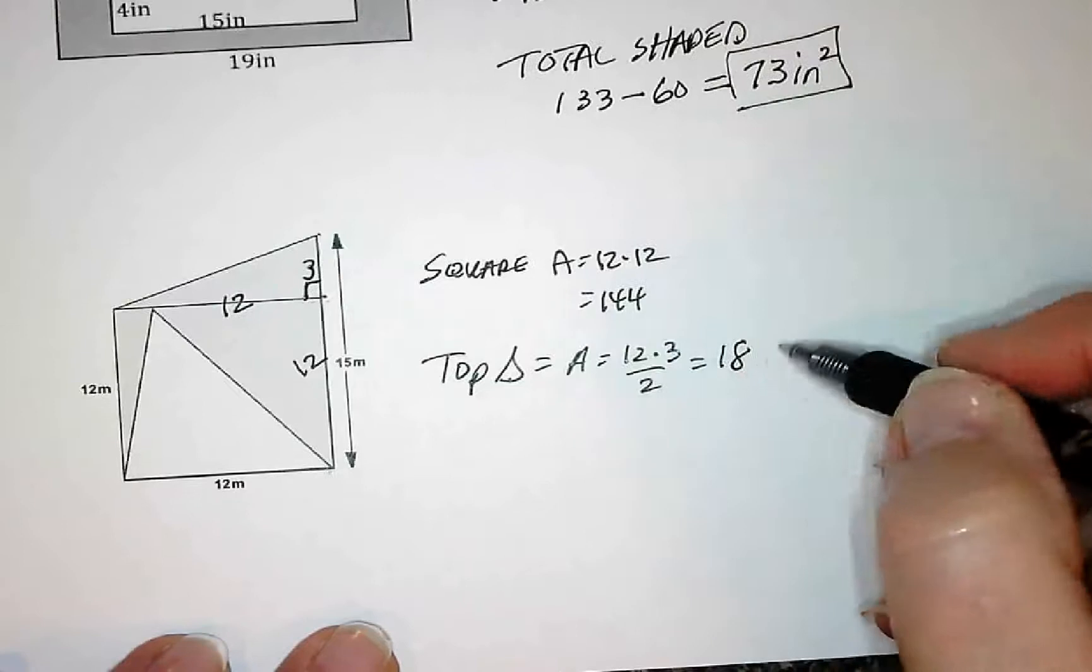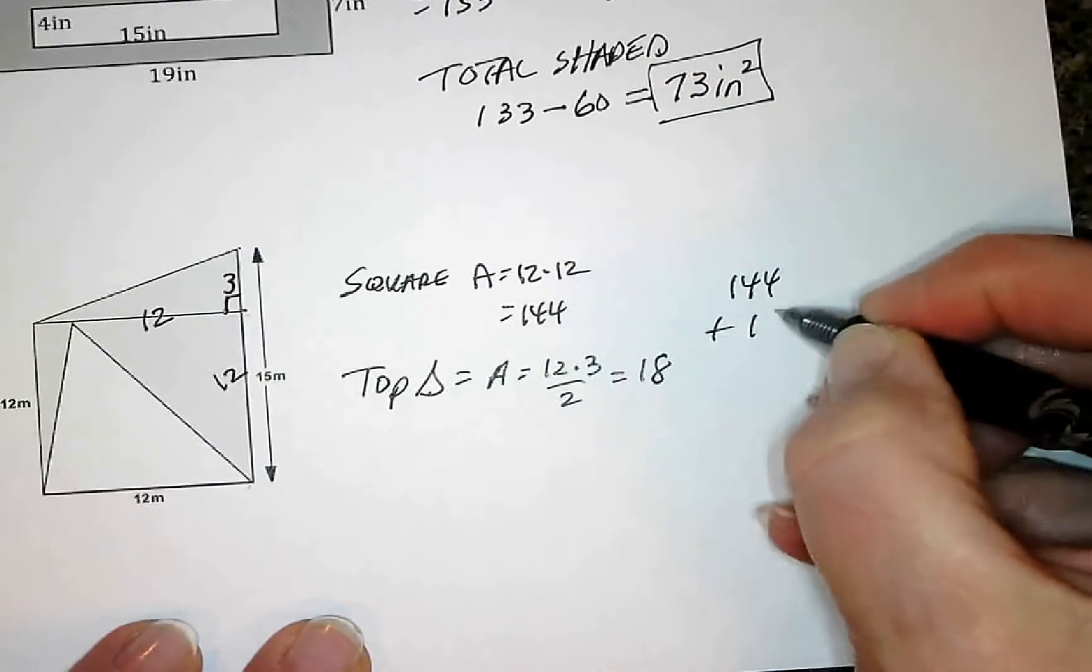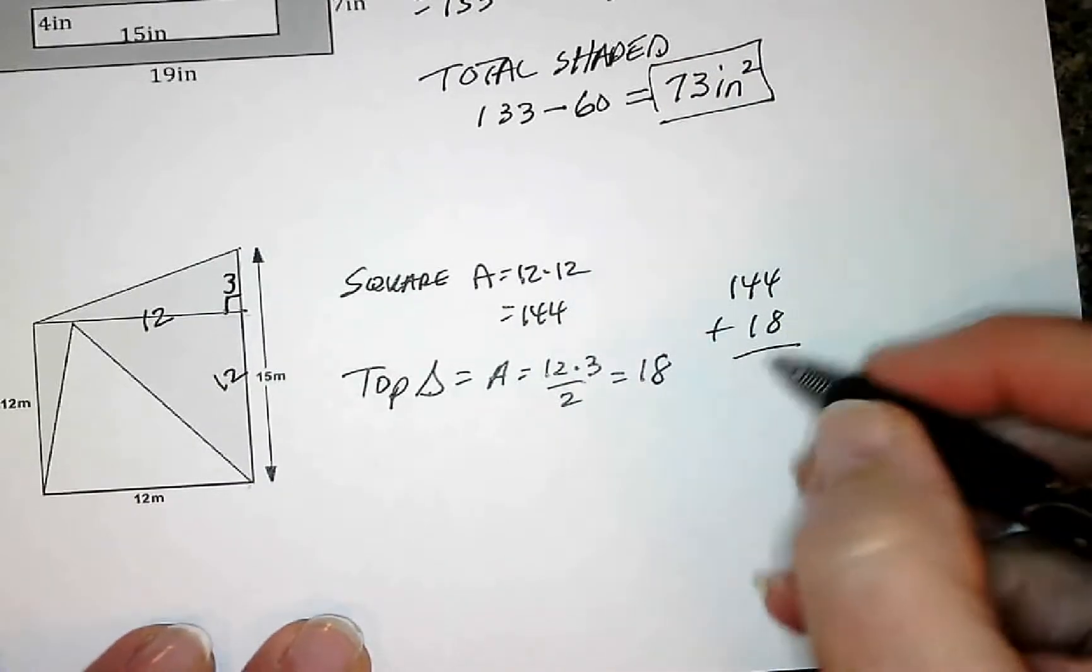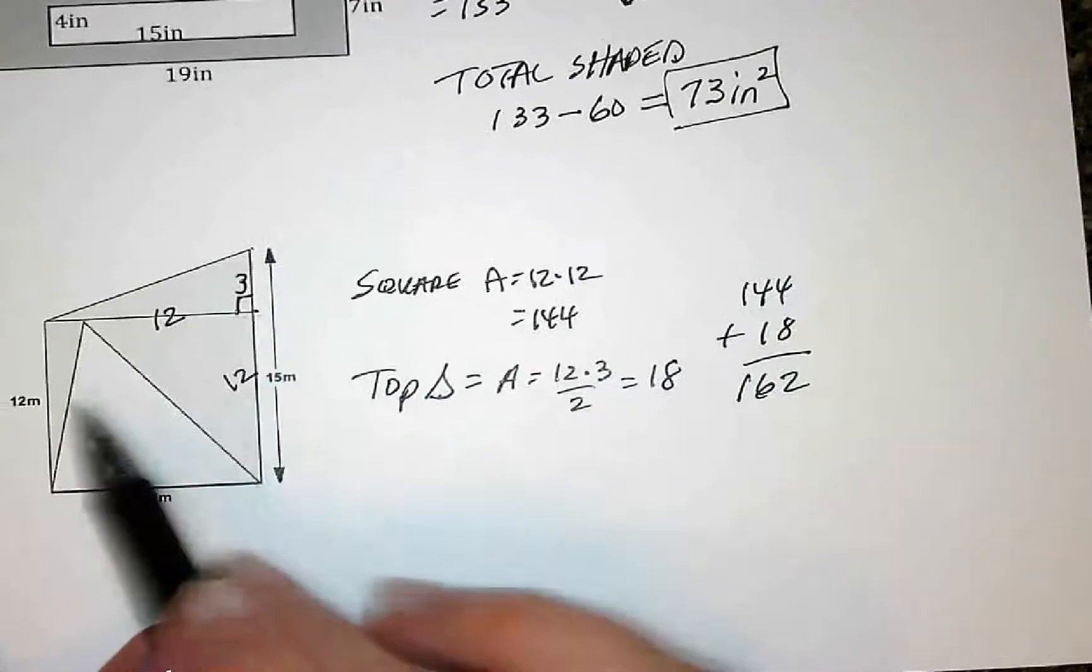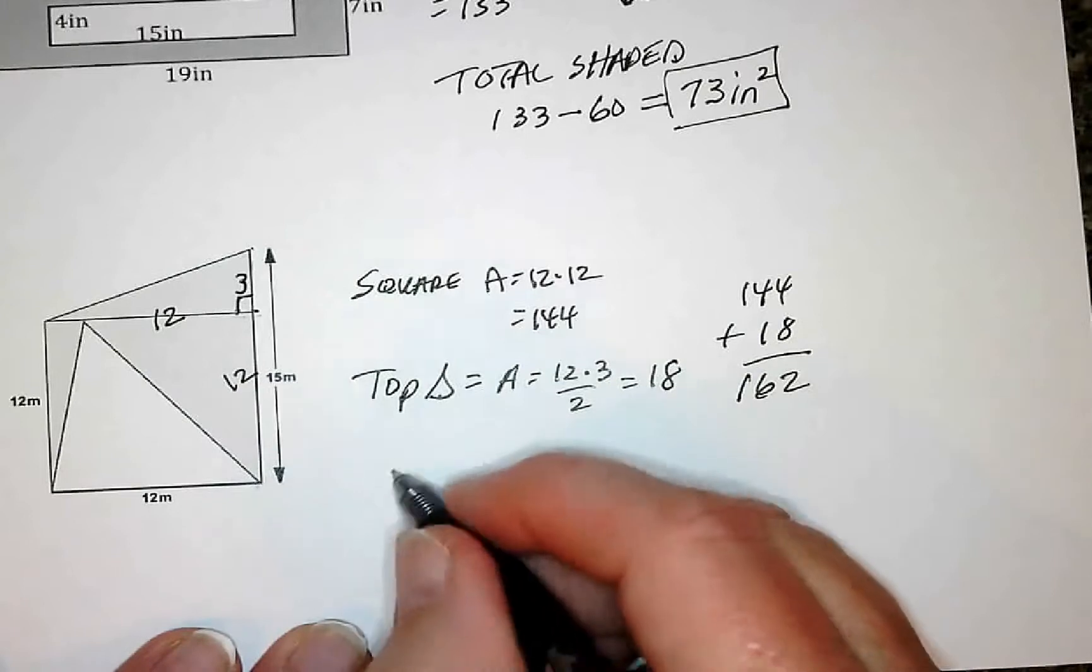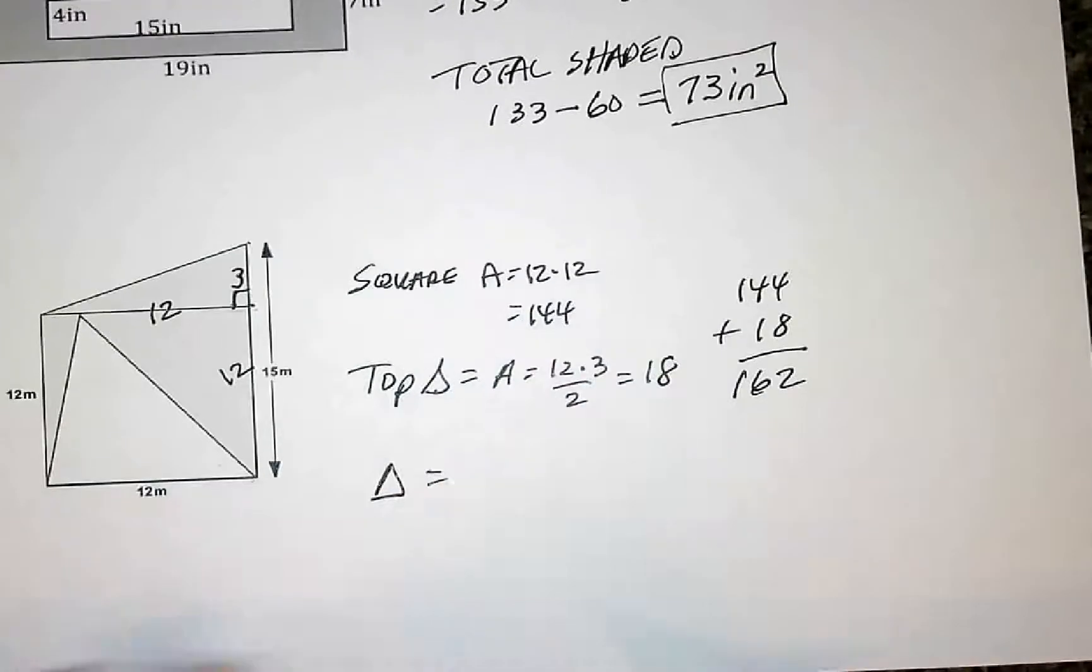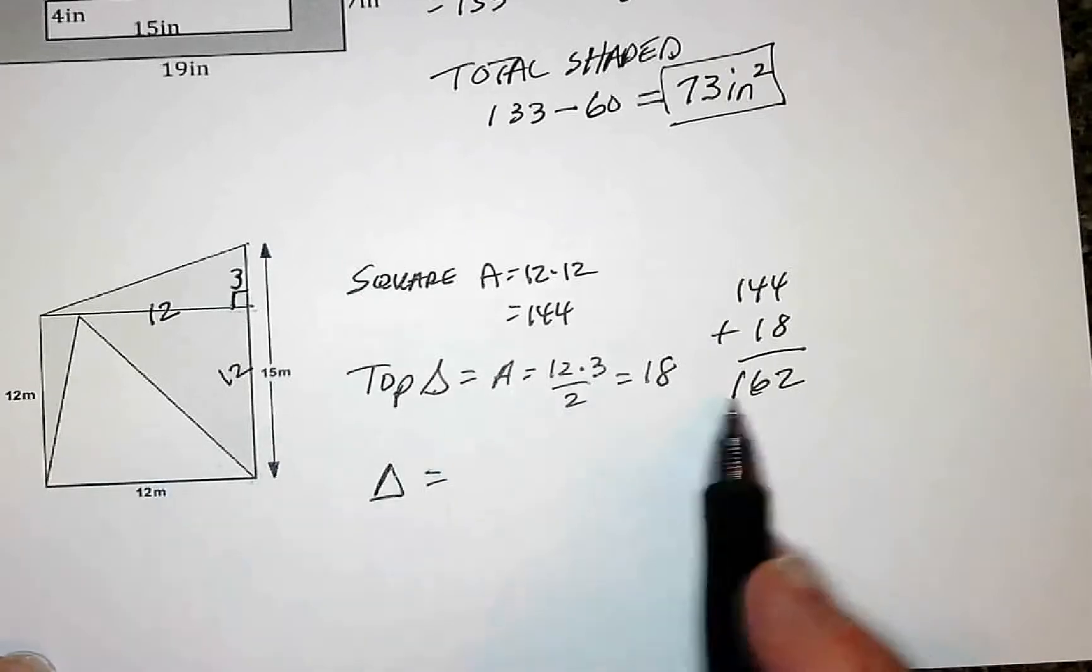So now if I put those two together, 144 plus 18, I get 162. Now 162 is the total for everything, but I need to subtract or find the area, first of all, this triangle right here, so that I can take it out of the 162.